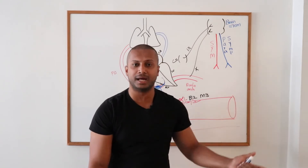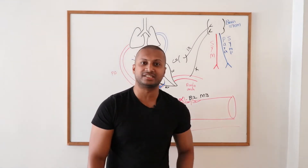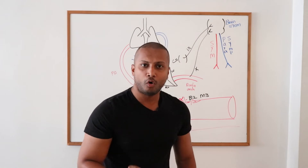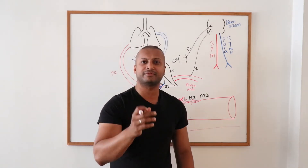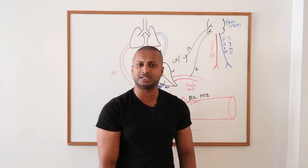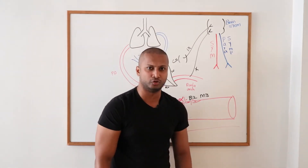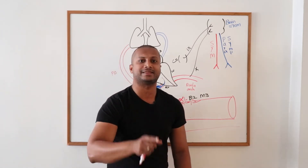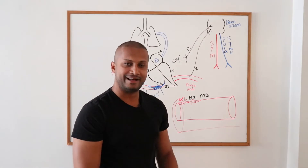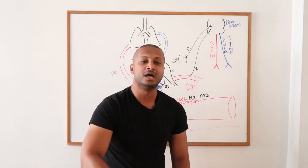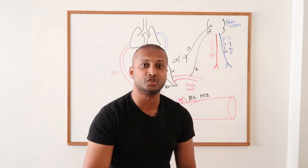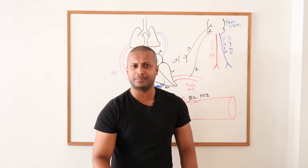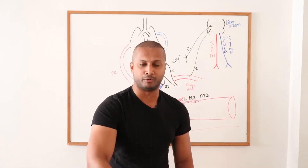For the other shock types, correct the primary problem: hypovolemic shock — give fluids and blood; obstructive shock — decompress the tension pneumothorax, lyse or remove the massive pulmonary embolism, or perform pericardiocentesis for tamponade; cardiogenic shock — cardiac cath and stent for massive MI, fix the valvular problem, or treat the arrhythmia. None of them truly require pressors because pressors don't fix the underlying problem. Whereas in septic shock, pressors don't fix the problem either, but pressor support is definitely required.